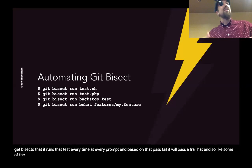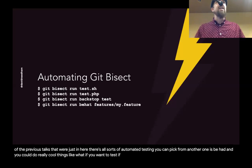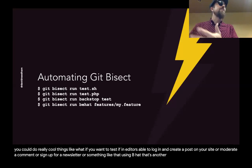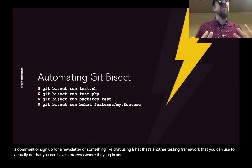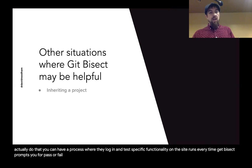You can set that up with git bisect so it runs that test every time at every prompt, and based on that pass or fail, it'll pass or fail automatically. Then there's also Behat. Like some of the previous talks, there are all sorts of automated testing tools you can pick from. With Behat, you could test things like whether an editor is able to log in and create a post, moderate a comment, or sign up for a newsletter — and plug that in so it runs every time git bisect prompts you.